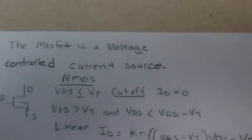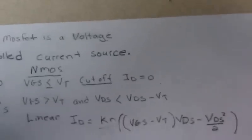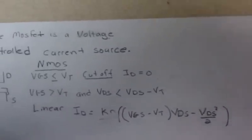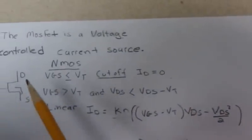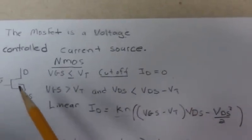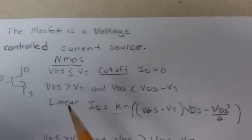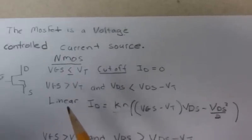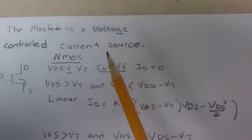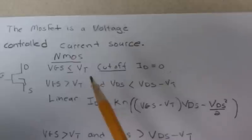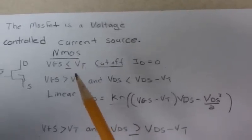The MOSFET is a voltage-controlled current source. That's the symbol of an N-MOSFET. But rather than just a constant current, the voltage control has several modes in the classical sense.